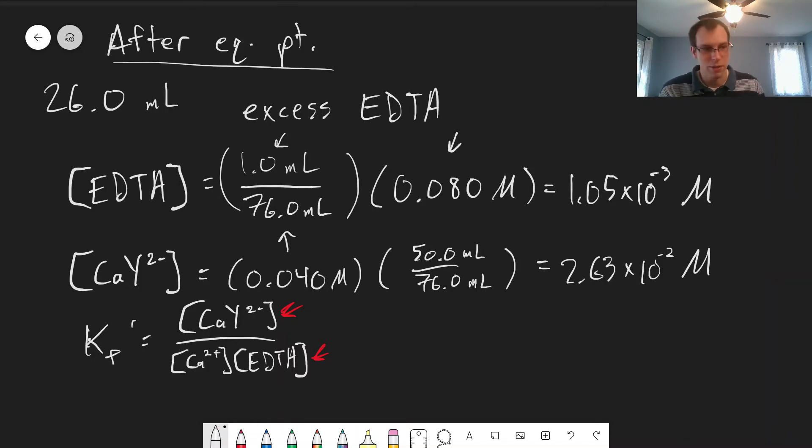We just plug in the values we figured out: 2.63 times 10 to the minus 2 molar for the complex, calcium is X, and EDTA concentration is 1.05 times 10 to the minus 3 molar. Our Kf prime value is the same as we calculated previously: 1.34 times 10 to the 10. There's not even a quadratic involved - we can just solve for the calcium concentration.